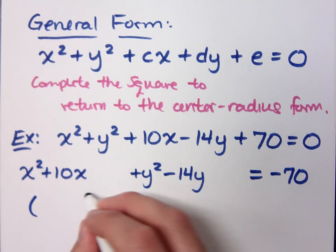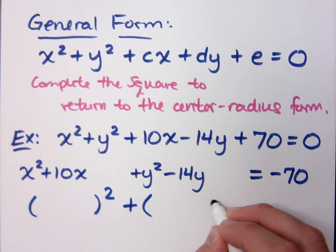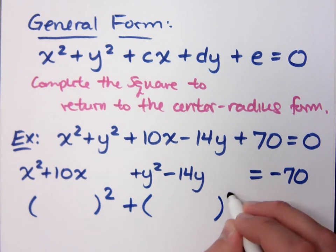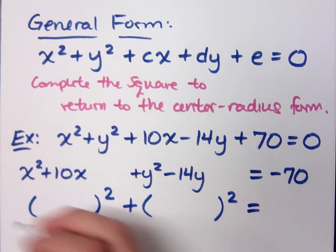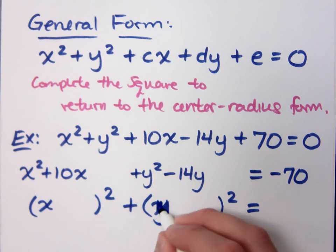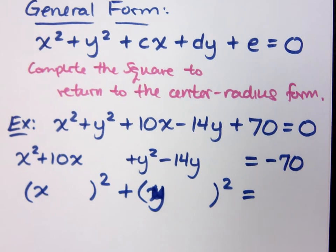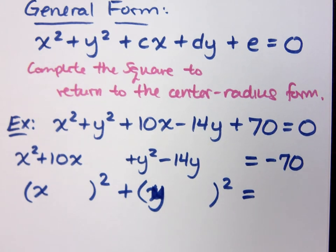We can find something so that this group factors as a perfect square and this group also factors as a perfect square. I'm going to go ahead and fill in what we already know. Complete the square — what's half of 10? Positive 5. What's 5 squared? If I just add 25 here, I'm going to be in trouble. That's wrong. You have to add it to the other side as well. I have to add 25 over here.